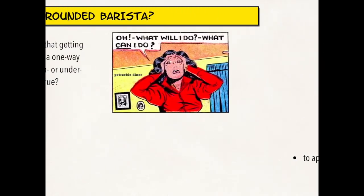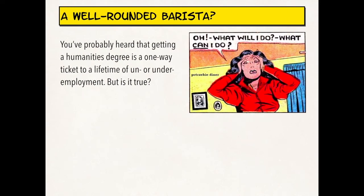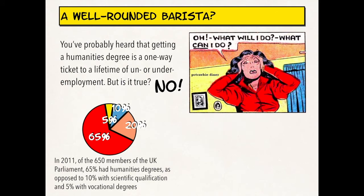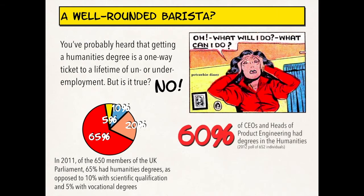This is great and all, but I know what some of you might be thinking. There's a very common notion that getting a humanities degree or studying literature is a one-way ticket to a lifetime of unemployment or underemployment. But is that actually true? No. In 2011, of the 650 members of the UK parliament, 65% of them had humanities degrees, as opposed to 10% with scientific qualifications and 5% with vocational degrees. You might say, that's England — what about the US? Well, in a 2012 poll of 652 CEOs, 60% of CEOs and heads of products of engineering had degrees in humanities. That's an overwhelming majority.